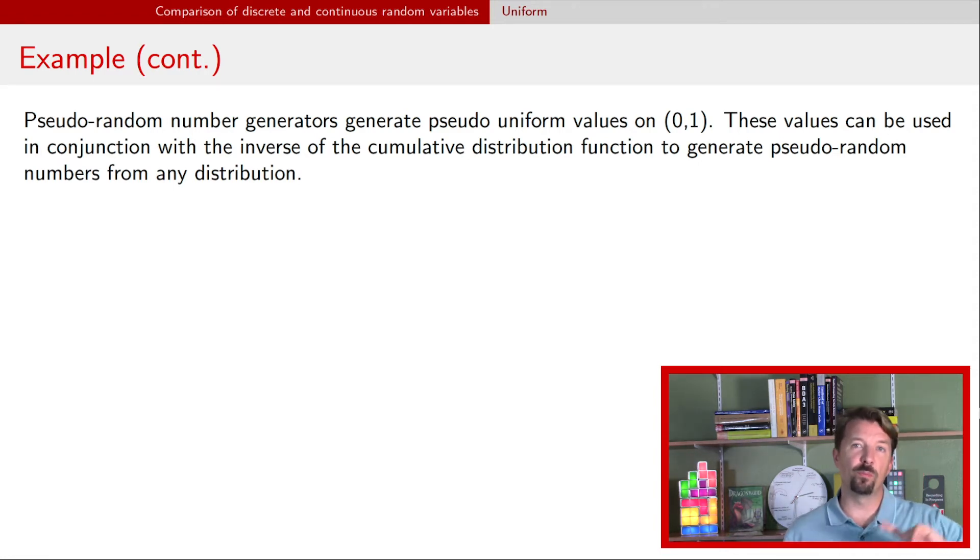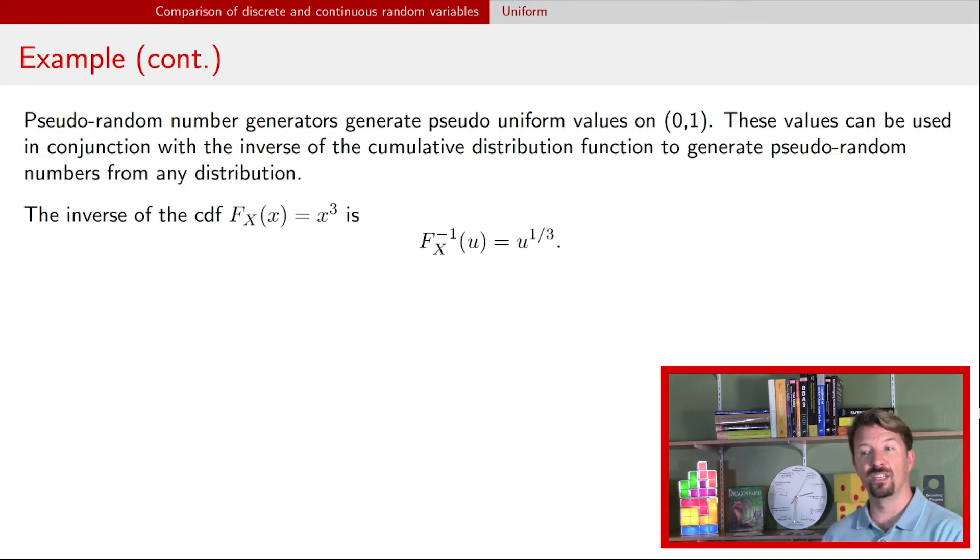If you remember from the previous slide we had this random variable we looked at that had a probability density function that between zero and one was 3x². We found its cumulative distribution function which was x³. Well we can then find the inverse of this cumulative distribution function and it turns out if we make it a function of u, that u is raised to the quantity one-third. That's the inverse of x³.